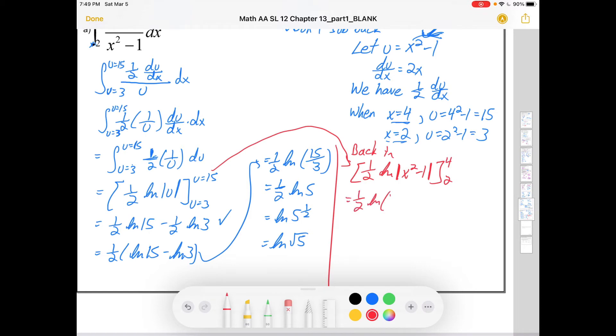You'll get a half ln of 4 squared minus 1 minus a half ln of 2 squared minus 1. Okay and wait for it. What does that give us? That gives us a half ln 15 minus a half ln 3. And you can see that that's exactly what we got right here. Okay which was a correct answer. But we got it less painfully by doing what we had in blue.